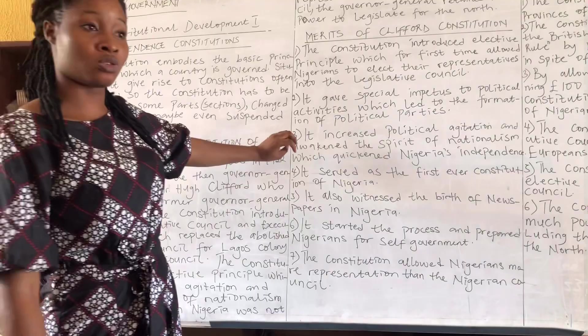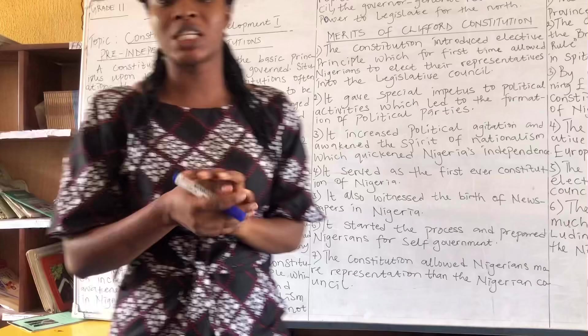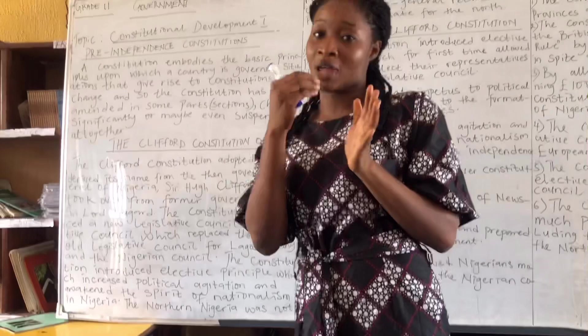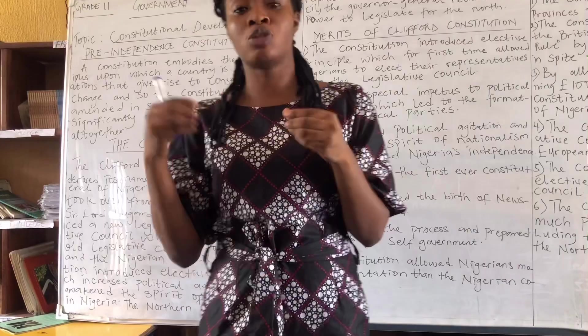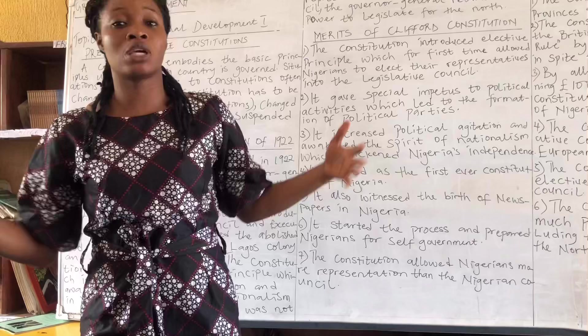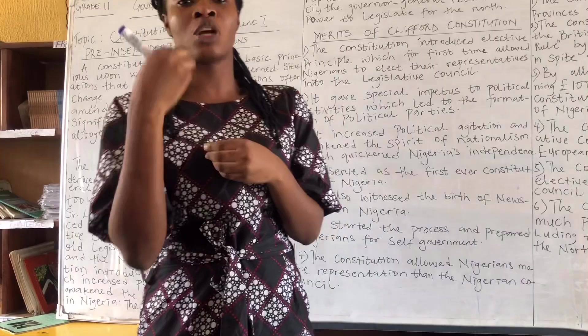A constitution embodies the basic principles by which a state is governed. It has a preamble which states the ideology of every state. Certain situations cause constitutions to be amended or changed — for example, when a nation doesn't have a constitution, it calls for a constitutional review, whereby constitutional conferences are held in order to produce a constitution.